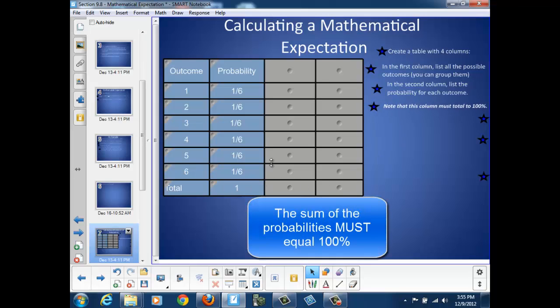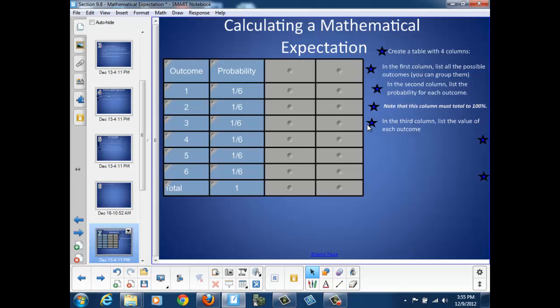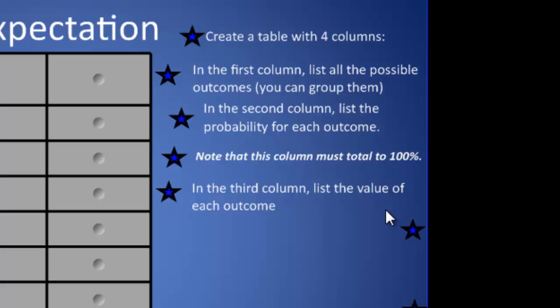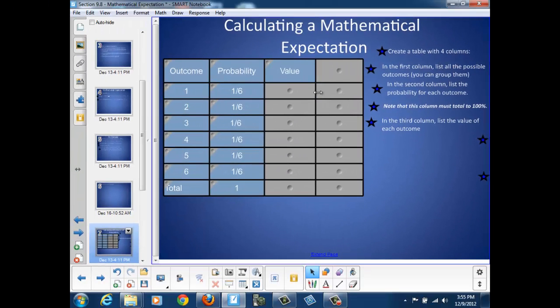Note that this column has to add to 100%. We want to make sure we take into account every possible outcome. In the third column, we're going to list the value of each outcome.